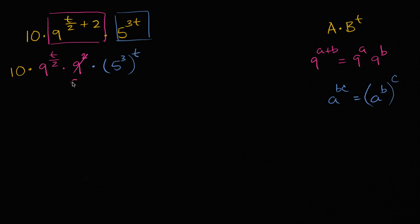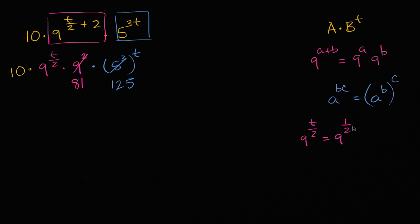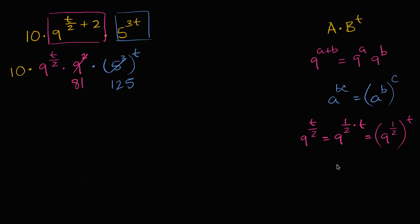9 squared is 81, and 5 to the 3rd power is 25 times 5, that's 125. So we're making good progress. The only thing we really have to simplify at this point is 9 to the t over 2. That's the same thing as 9 to the 1 half times t, which by the same property is 9 to the 1 half, and then that to the t power. And 9 to the 1 half is 3, so this is going to be equal to 3 to the t power.